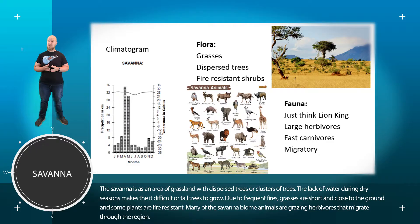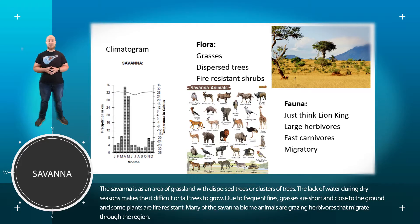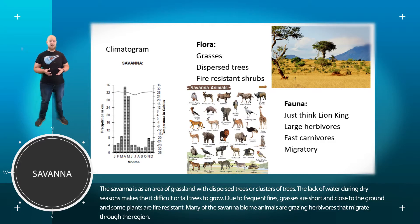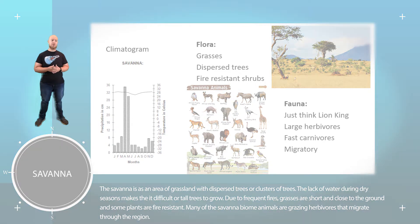The wet and dry seasons create some really interesting adaptations. A lot of the animals in the savannah end up migrating away during the dry season — many large herbivorous mammals will migrate during that time. The plant communities in a savannah really are just grasses and a few dispersed trees. In fact, that's the definition of a savannah: an area that is predominantly grasses with a few dispersed trees.